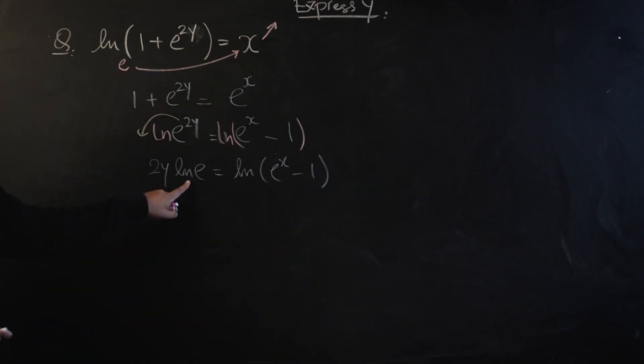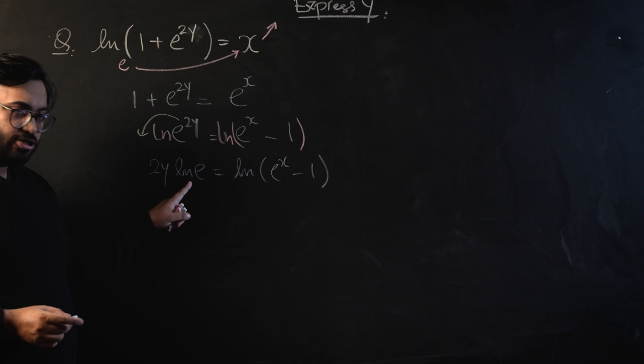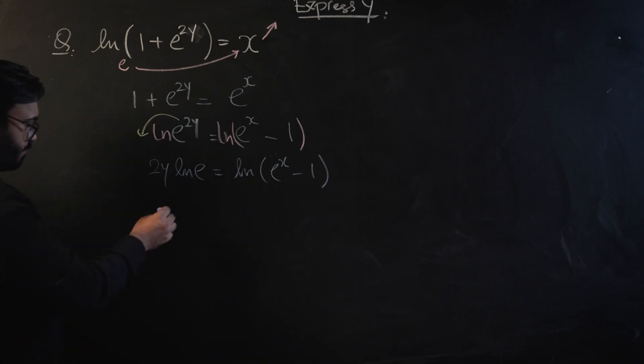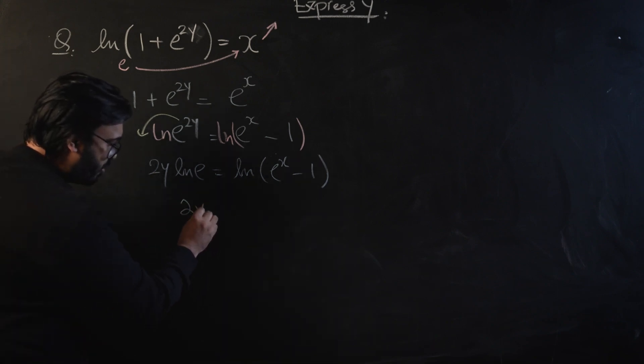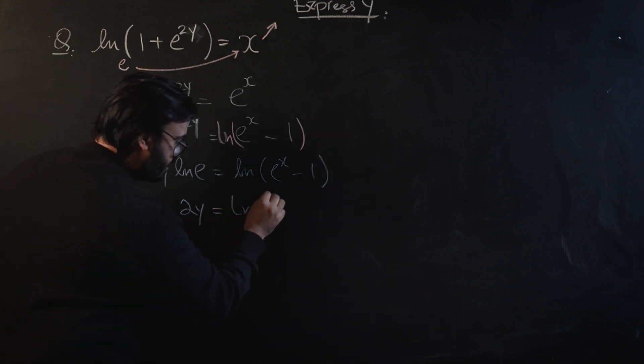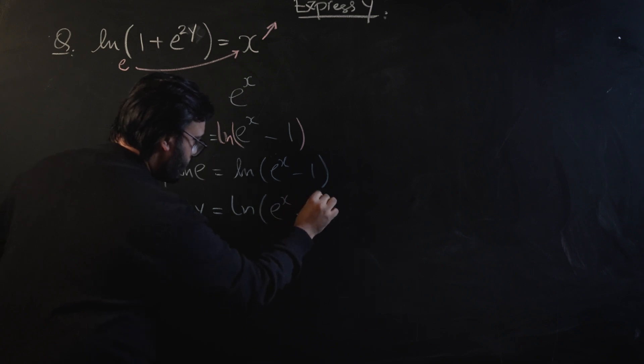Let's use the power rule to bring 2y before this term, so this will become 2y log of e equals log of e raised to the power x minus 1. We know for a fact that natural log of e will become 1 and the term that we are left with...